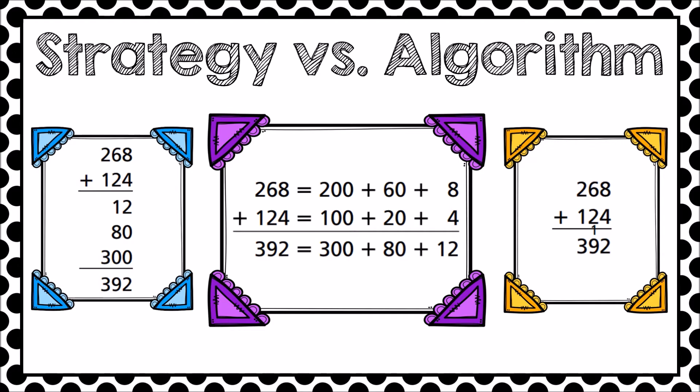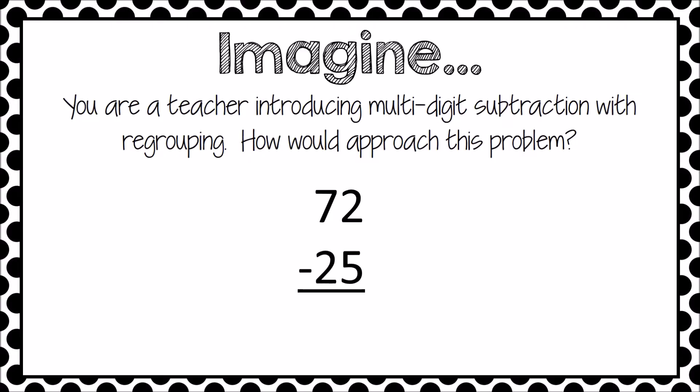The standard algorithm is efficient because it employs the place value knowledge and single-digit computation that students already have. Because of the structure of the standard algorithm, it may be executed with any size numbers. Throughout this video, we will reference the problem 72 minus 25.